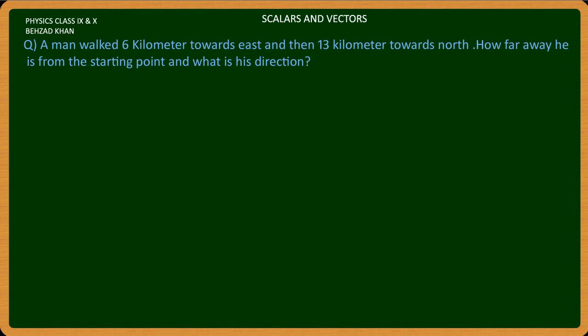Bismillahirrahmanirrahim. A man walks 6 km towards east and then 13 km towards north. How far away is he from the starting point and what is his direction? We have here 6 km towards east and 13 km towards north.